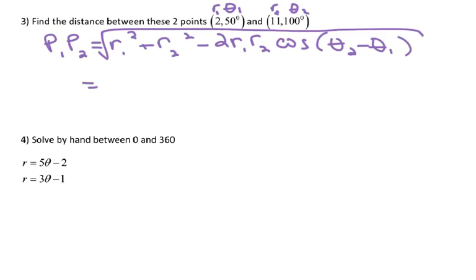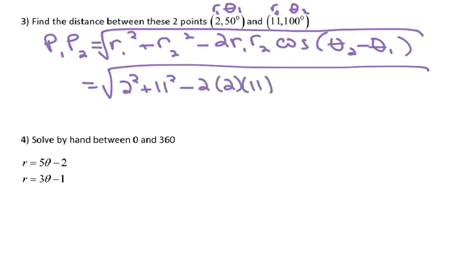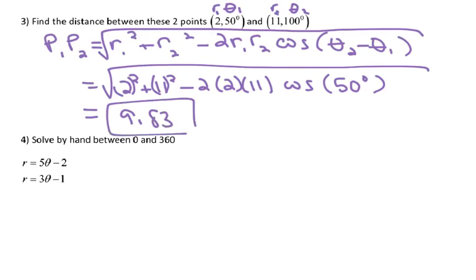So, the distance between these two points is going to be the square root of 2 squared plus 11 squared minus 2 times 2 times 11. And then, the cosine of 100 minus 50 is 50. I would suggest putting these in parentheses, because if the radius is negative and you don't put it in parentheses, you will get the wrong answer. And the distance between them will be about 9.83 units.